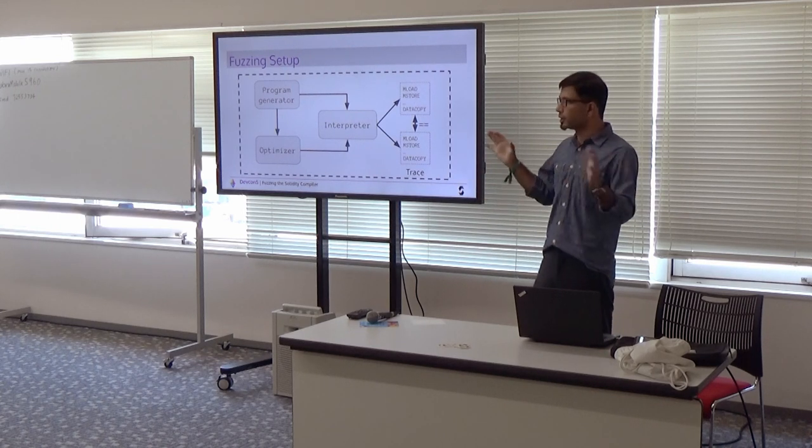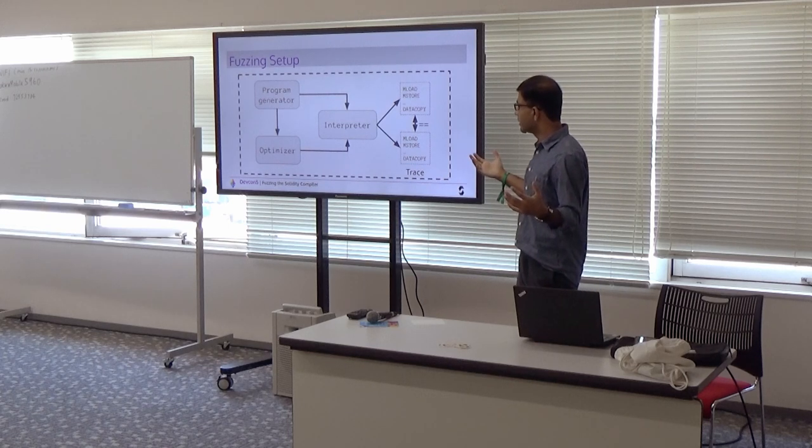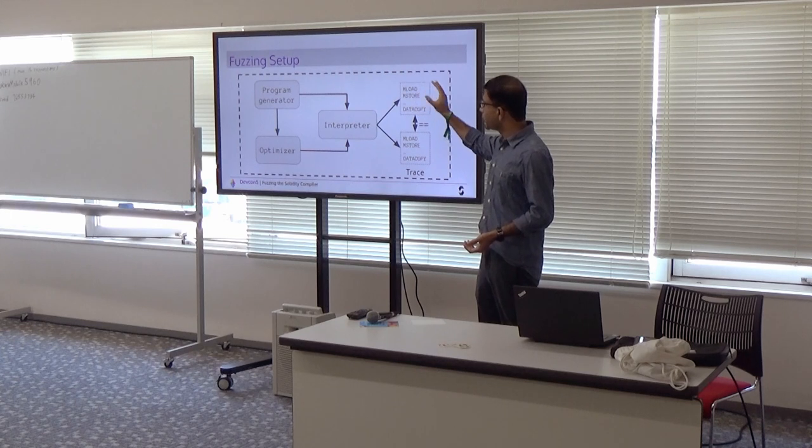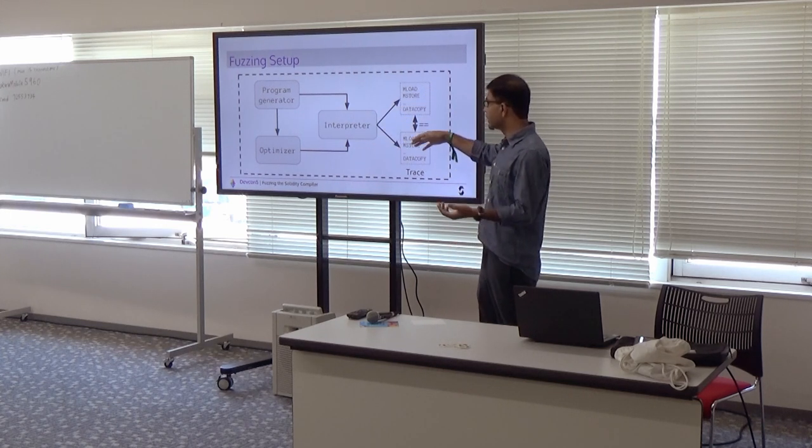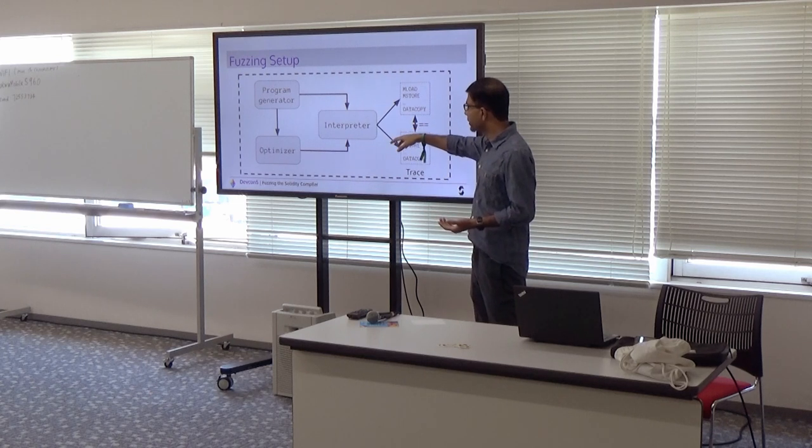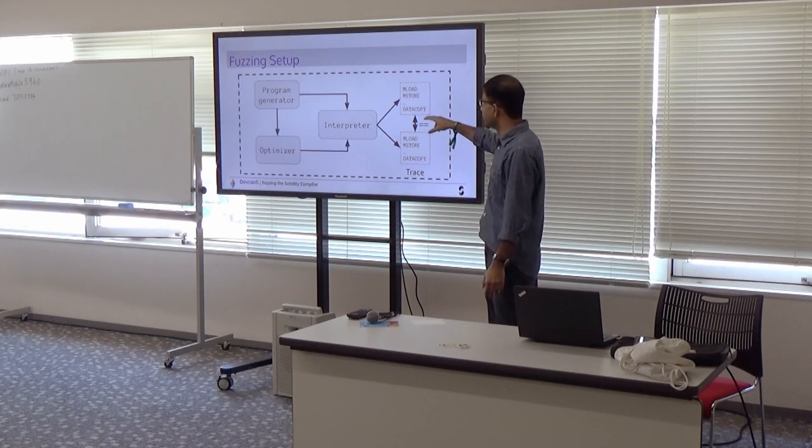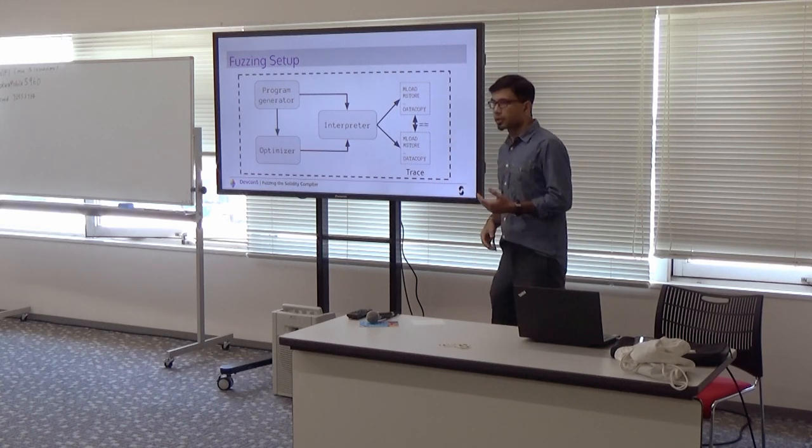And finally, we are ready to actually put all of these blocks together and test the optimizer. So we start by generating the program, feed it to the interpreter, optimize the same program, feed that, again, the optimized version to the interpreter, and then we get two execution traces, which are essentially strings, and then we can simply do string equality check.